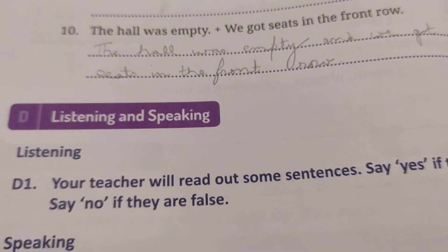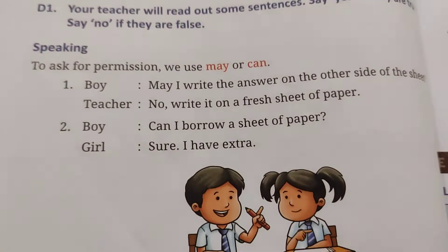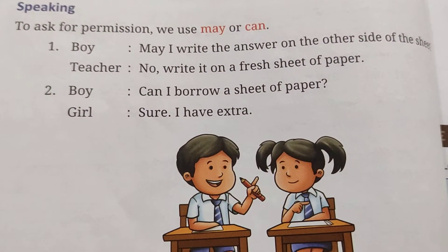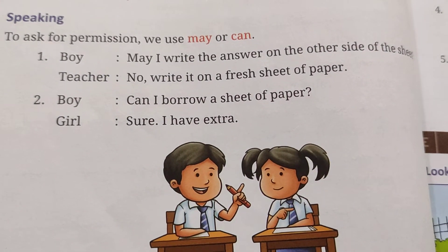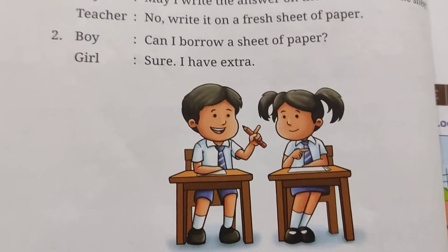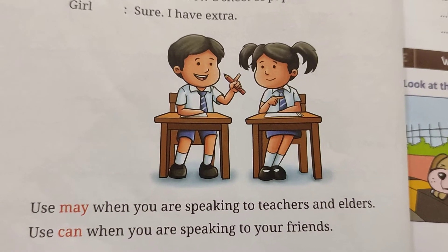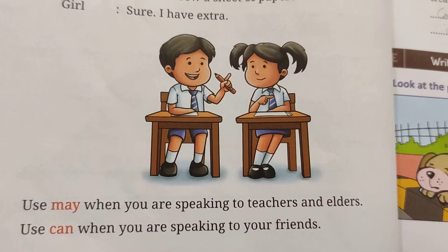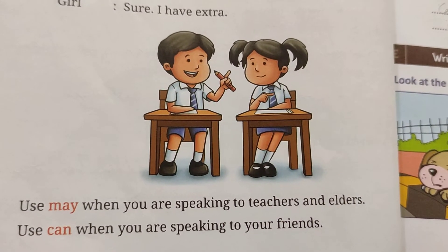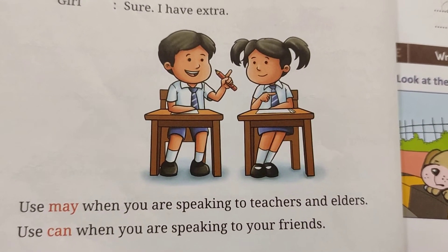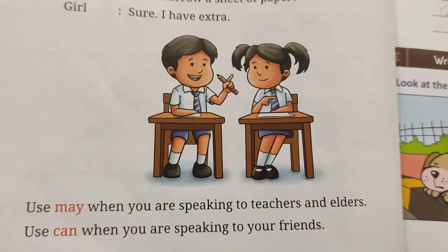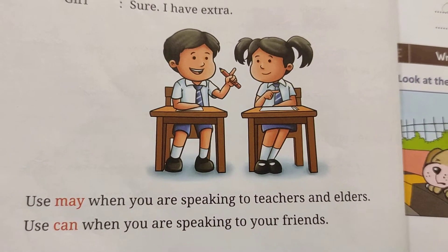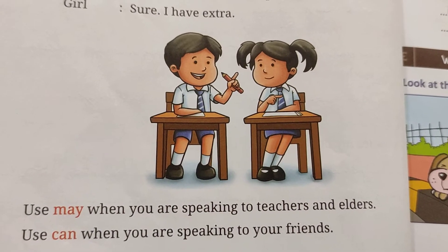After this we have Exercise D, Listening and Speaking. In the speaking exercise, it is told that for taking permission from someone we use the words 'may' and 'can'. We use 'may' when we are speaking to teachers and elders — if you want to seek permission from your teacher or anybody who is older than you, you will say 'may'. And if you are talking to your friends or somebody who is subordinate to you in position, you will use the word 'can'.